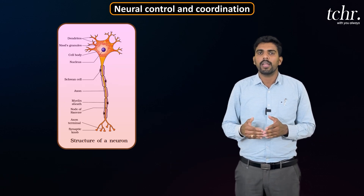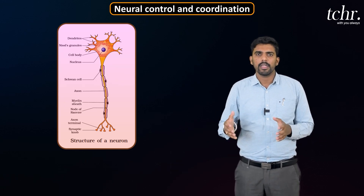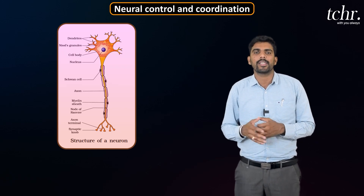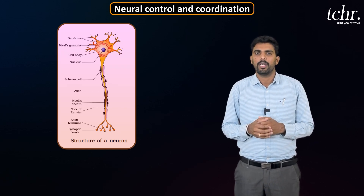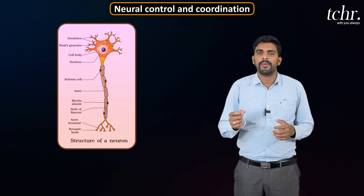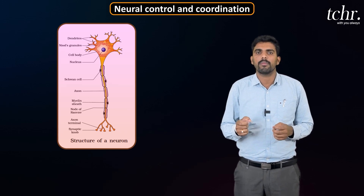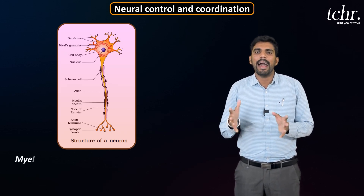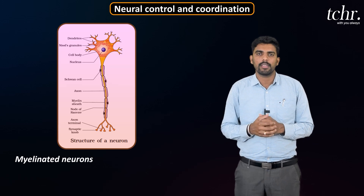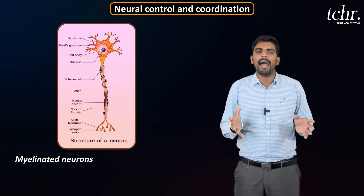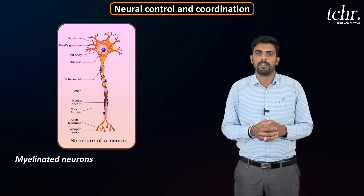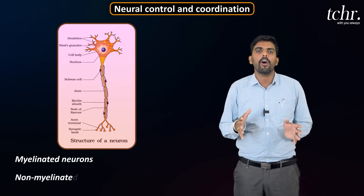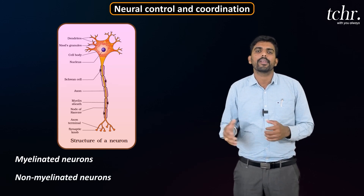Coming to the axon, it is of two types. In some neurons, the axon is covered by a myelin sheath derived from Schwann cells. Between the myelin sheath, we also observe nodes of Ranvier — these are called myelinated neurons. But in some neurons, the myelin sheath is completely absent, though Schwann cells are present; these are called non-myelinated neurons.